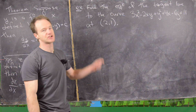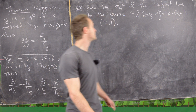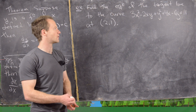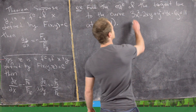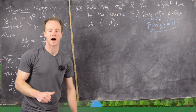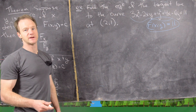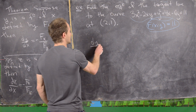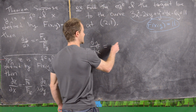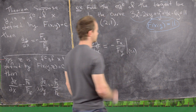For our first example, we apply the one-variable version of the theorem. We have the curve defined implicitly by 3x² − 2xy + y² − 4x − 6y = 11. This expression is our function F(x, y) equal to 11, which implicitly defines y as a function of x. Our goal is to write the equation of a tangent line at a certain point, so we need the slope, which means finding dy/dx. By the theorem, this equals negative the partial of F with respect to x over the partial of F with respect to y, evaluated at the point (2, 1).